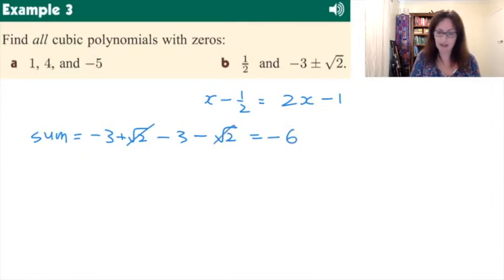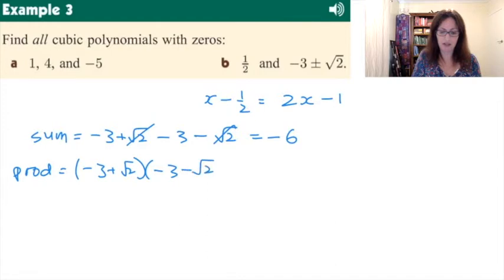and the product, multiplying them together, negative 3 add root 2 multiplied by negative 3 take root 2. Hopefully you know that what's going to cancel out here, and we've got this, the negative 3 multiplied by negative 3, and then the root 2 multiplied by negative root 2, what we're going to get there is 9 subtract 2, which will give us 7.